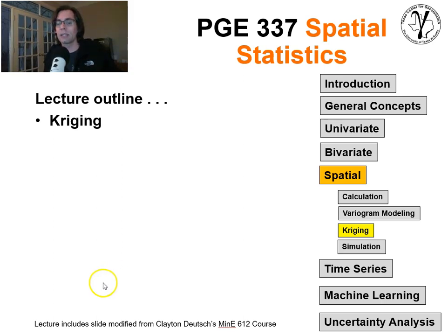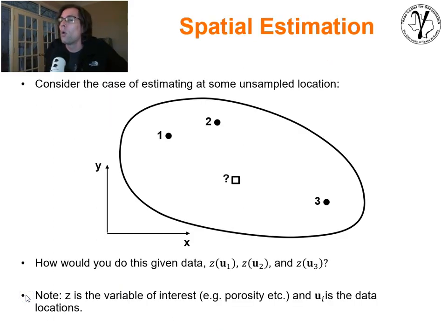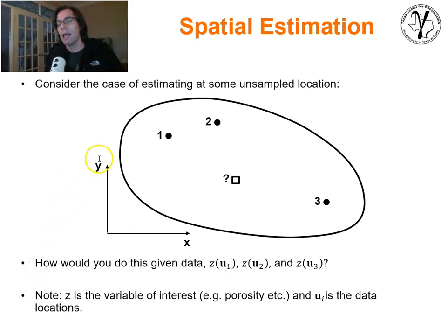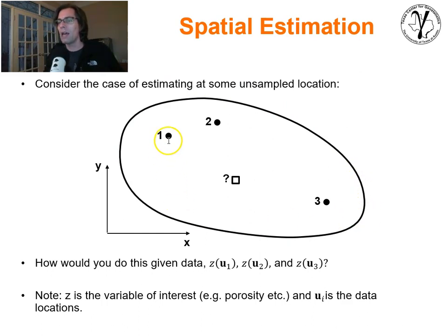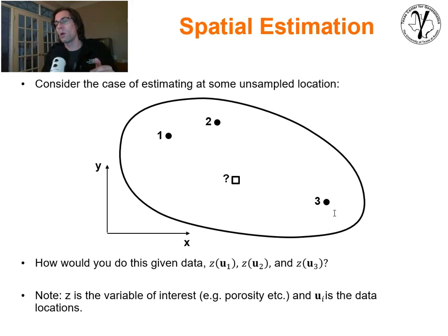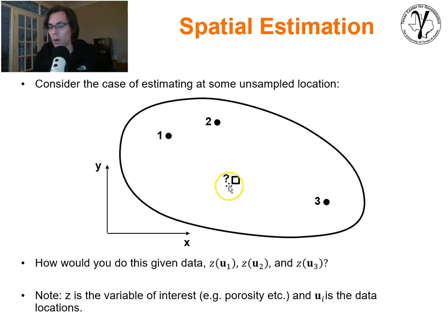So what does spatial estimation look like? Let's take a very simple example. Consider this situation: we have an area of interest delineated by this oval shape, and we have data points 1, 2, and 3. At those locations we have data available to us, so we know what's going on. The problem is that we'd like to know what's going on at this unknown location here.